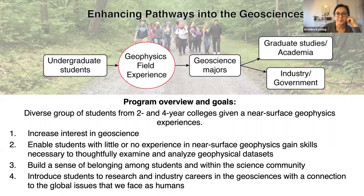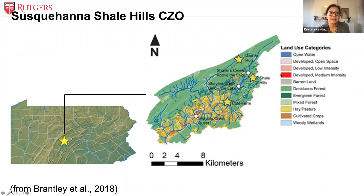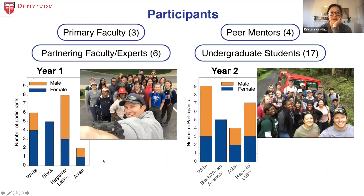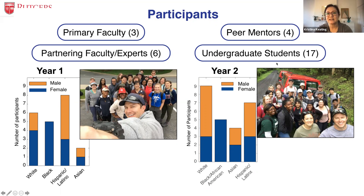The field program takes place at the Susquehanna Shale Hills Critical Zone Observatory, run through Penn State and located in central Pennsylvania. We've worked at the Garner Run site and the Coal Farm site within the CZO. There are three primary faculty, peer mentors — four in the first year and five in the second — partnering faculty and experts in critical zone science, with help from folks at Penn State including Sue Brantley and Roman DiBiase. About 16 to 17 students participate every year.